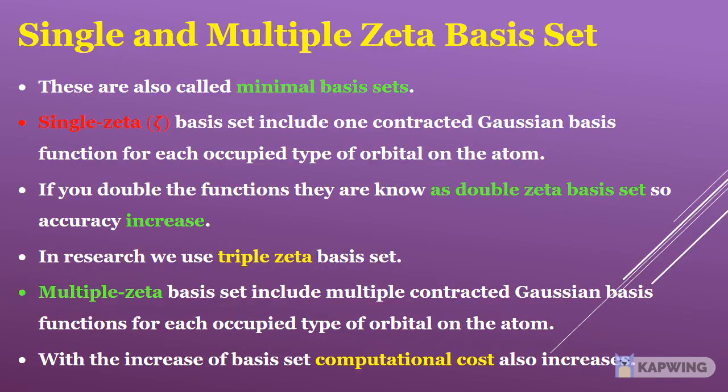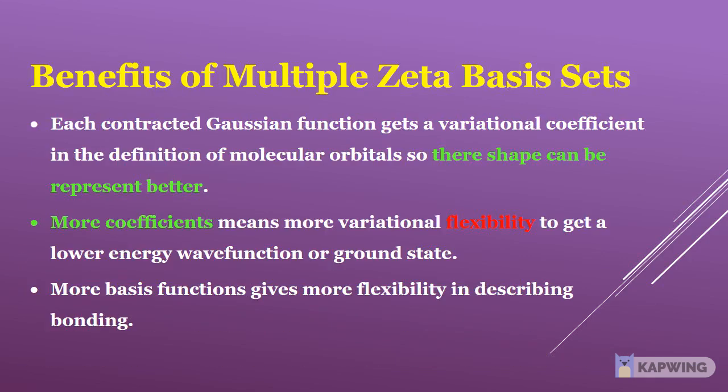Single and multiple zeta basis sets are also called minimal basis sets. A single zeta basis set includes 1 contracted Gaussian basis function for each occupied type of orbital on the atom. If you double the functions they are known as double zeta basis sets, increasing accuracy. In research we use triple zeta basis sets. Multiple zeta basis sets include multiple contracted Gaussian basis functions for each occupied orbital type, but with increased basis set size, computational cost also increases.